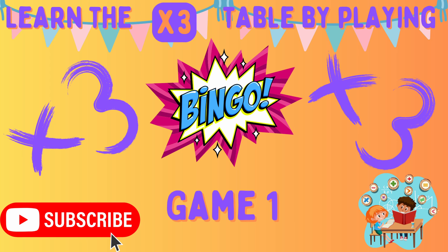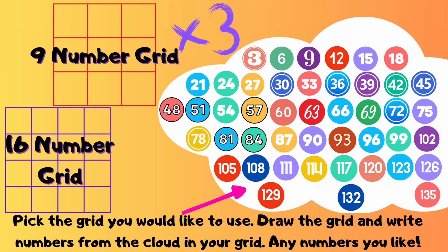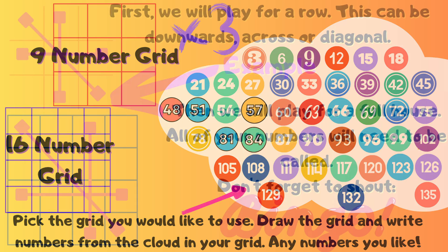Let's explain the rules. For today's game you can use a nine number or a sixteen number grid. Pick which grid you would like to use, draw it out on a piece of paper and write any numbers from the cloud in your grid. These can be any numbers you like as long as they are all unique.